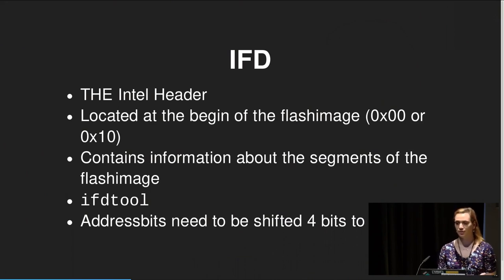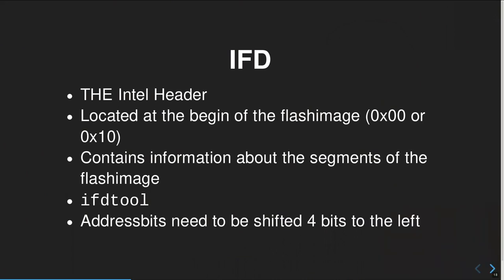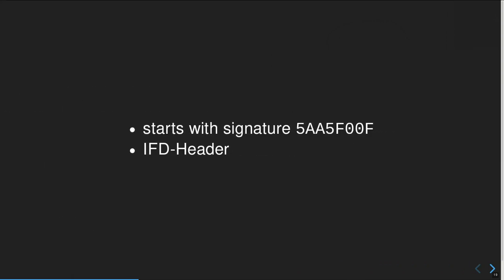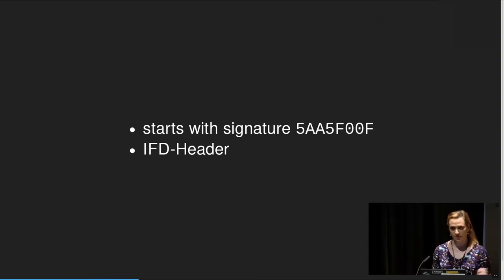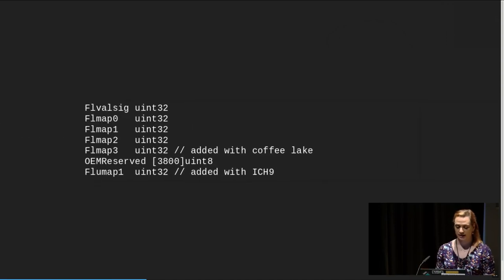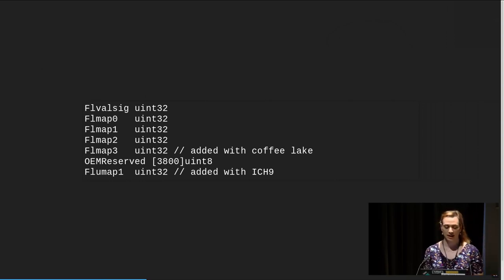The IFD is the big Intel header in your flash image. It's located at the beginning — either at offset 0 or 0x10. It contains information about the segments of the flash image, the configuration you want to run the image in, and all the other stuff the CPU needs to know. Your tool of choice if you don't want to parse it yourself is IFD tool, found in the coreboot tree. Address bits in these headers need to be shifted to the left, so all addresses must be aligned. The IFD itself starts with the signature 0x5AA5F0F0F0F0.